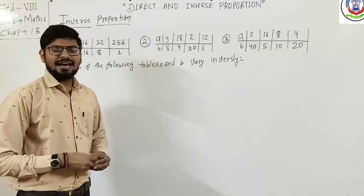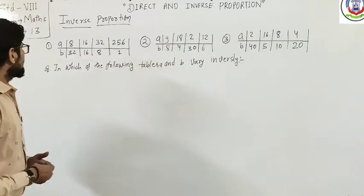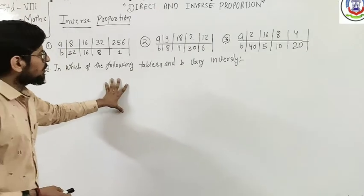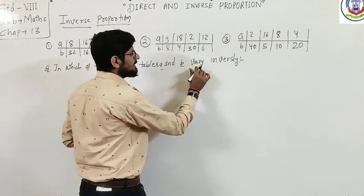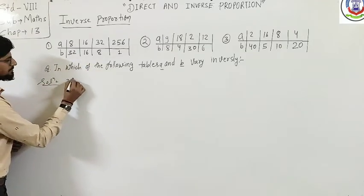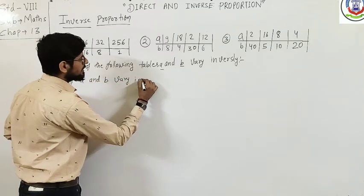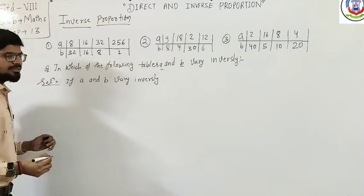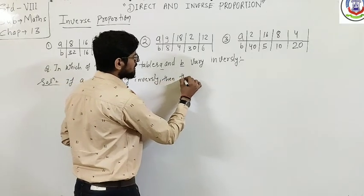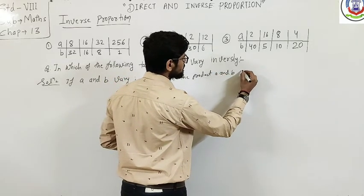Now let's look at some examples. There are three examples. The first one is: which of the following numbers A and B vary inversely? If A and B vary inversely, it means they are in inverse proportion, and the product of A and B will be constant — meaning the same.